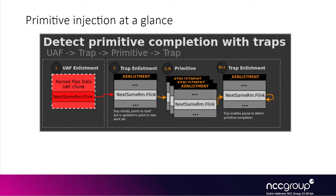This diagram reminds us of the primitive we have in the vulnerable function using fake userland KEnlistments and trap enlistments. The kernel loops over the next same RM fling pointer in the trap enlistment indefinitely, and at any time we can inject a new enlistment — a primitive enlistment — to do things. This primitive enlistment can be any type: a leak enlistment, a write-zero primitive enlistment, and now an increment enlistment, the limited write primitive enlistment. By chaining several increment enlistments we can increment the value at a given address as many times as we want.